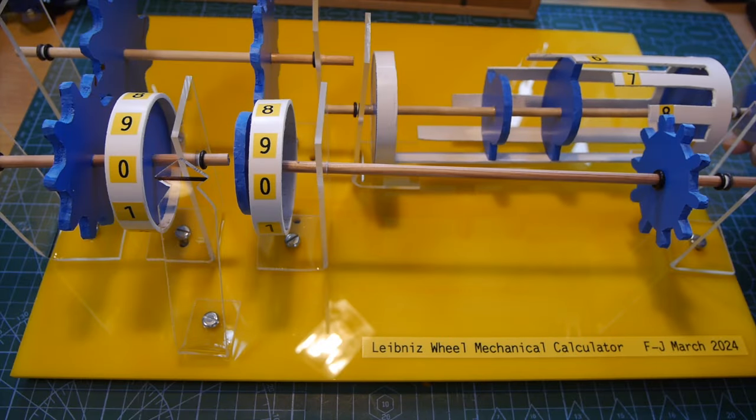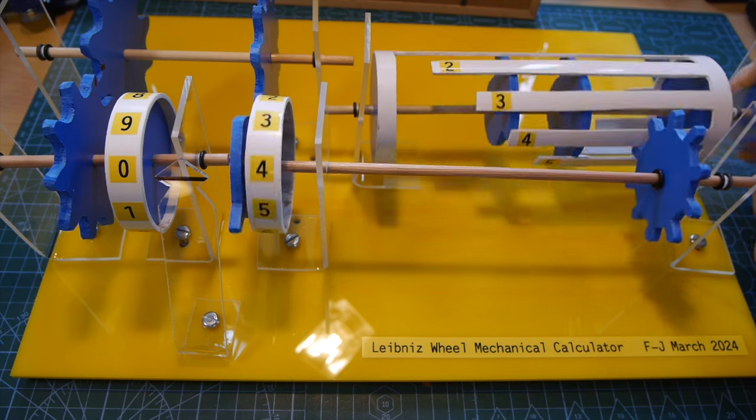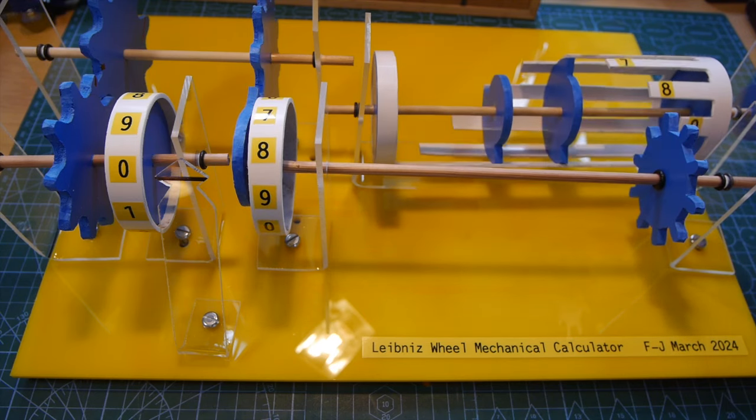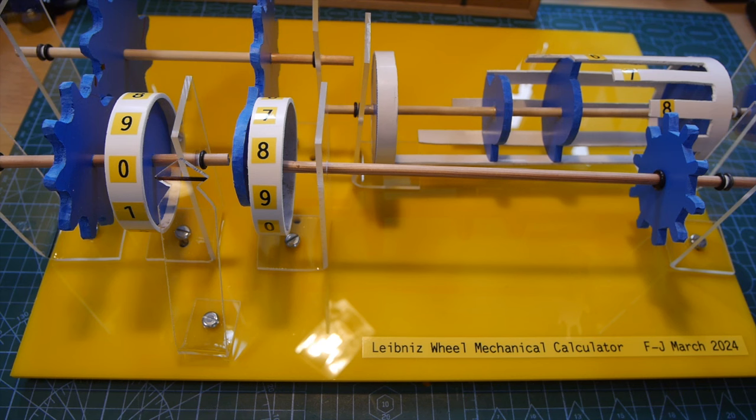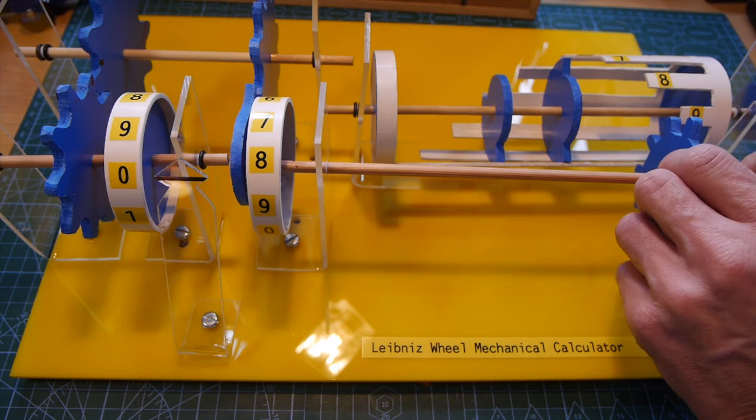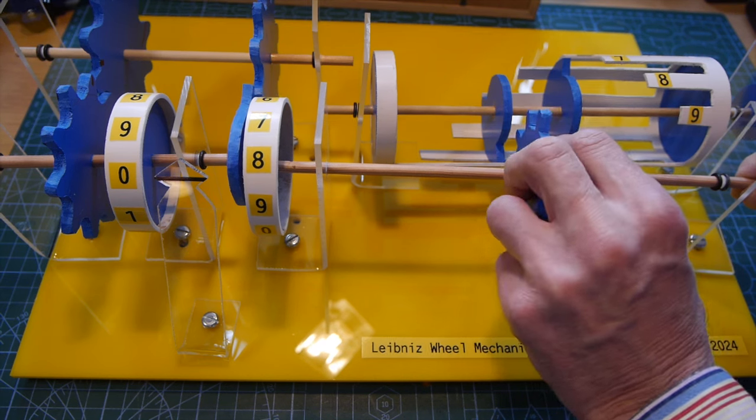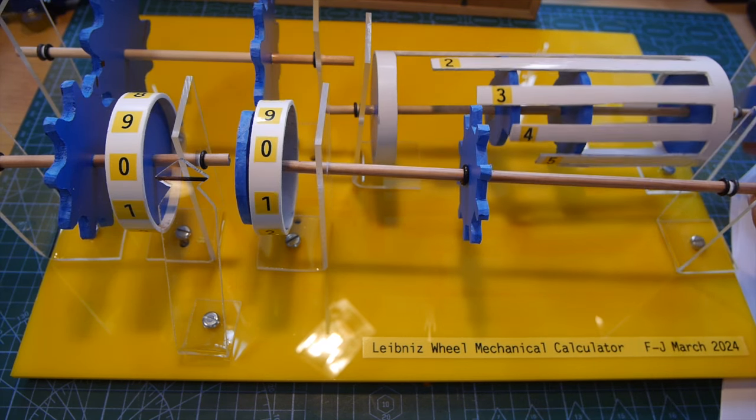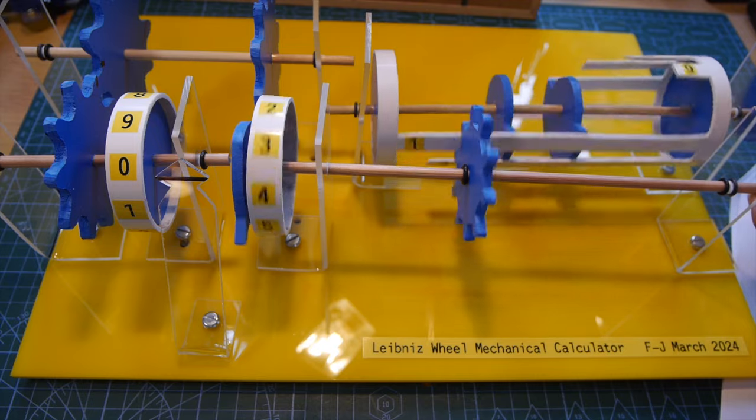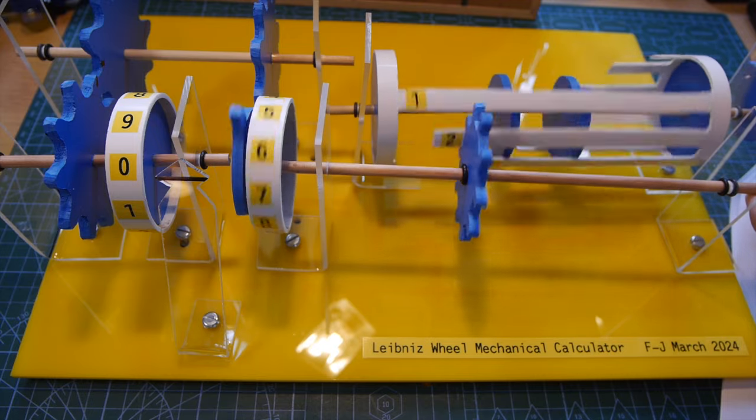For example to add eight plus four we could position the counting wheel over the eight on the Leibniz wheel, rotate once to enter the eight and then move it to position four and enter four with a full rotation. But things can be simplified by adding six twos or adding three fours as we did earlier.